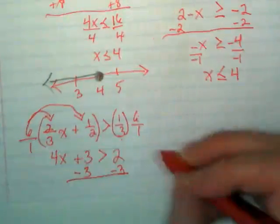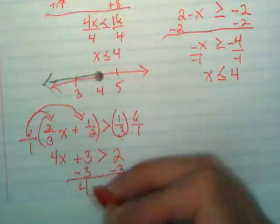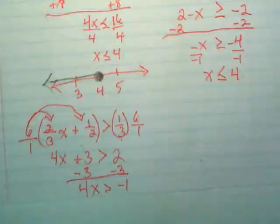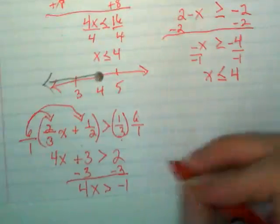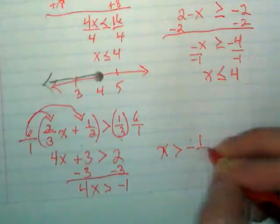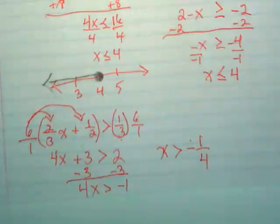Subtract 3 from both sides. I'm running out of room. 4x is greater than negative 1. I'm going to divide by 4. And so x is going to be greater than negative 1 over 4. My symbol is not flipping, because I didn't divide by the negative. I divided by a positive.